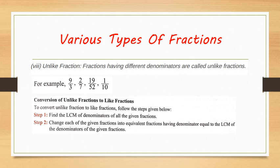Now, how to convert unlike fractions into like fractions. We follow two steps: first, find the LCM of the denominators of all the given fractions, and then change each of the given fractions into equivalent fractions having a denominator equal to that LCM.